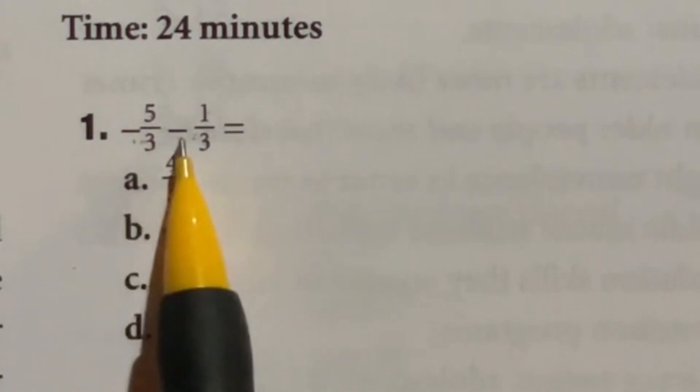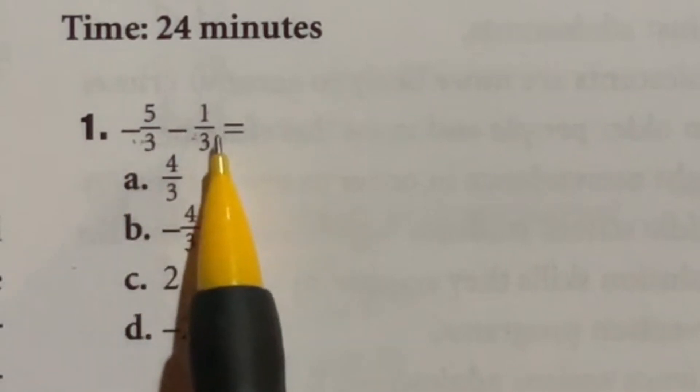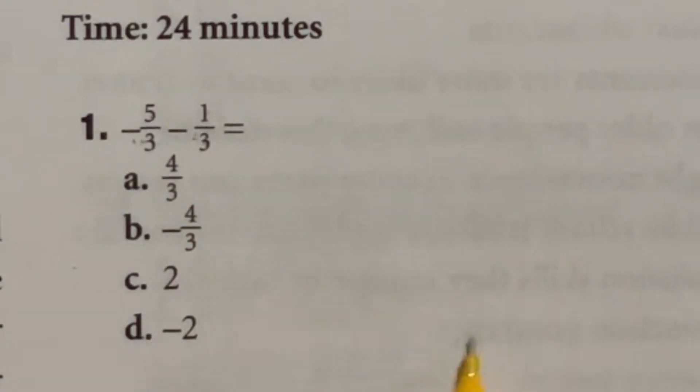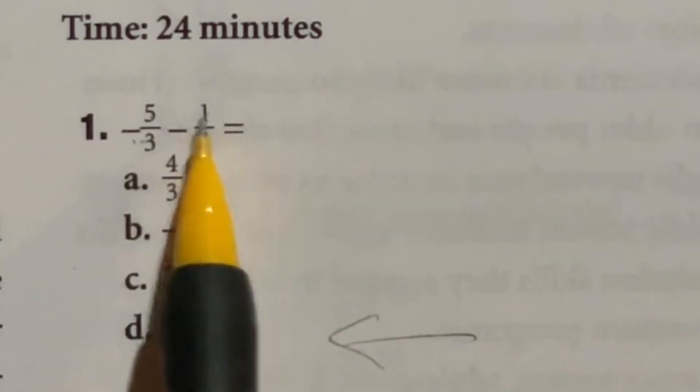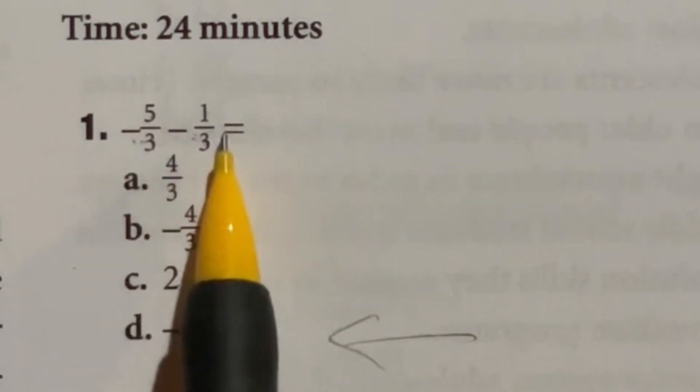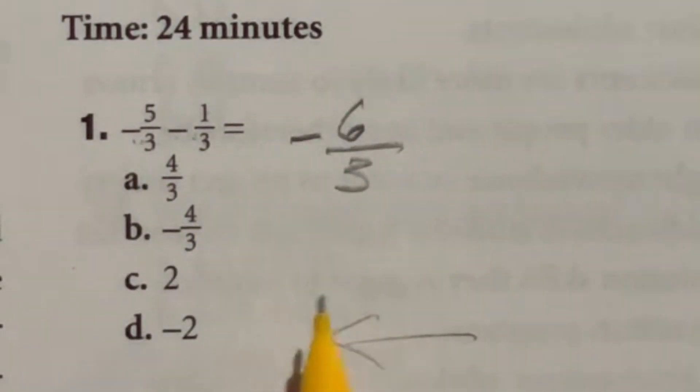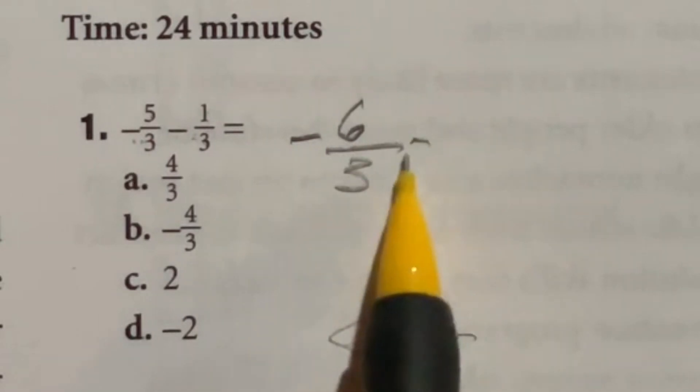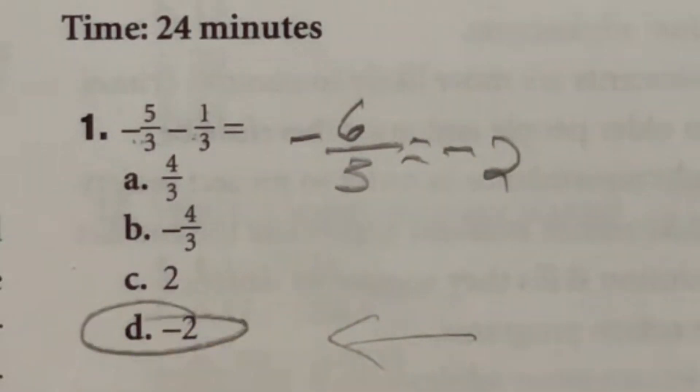Both of these are negative here. So since this guy already started negative, and we're subtracting this, we're just going more further in the negative direction. So we're actually just going to do five plus that one since we're essentially going downward anyway. That's going to end up giving us a negative six over three. In that case, six divided by three is just going to give us two. So we're going to end up with negative two as a final answer, which is D.